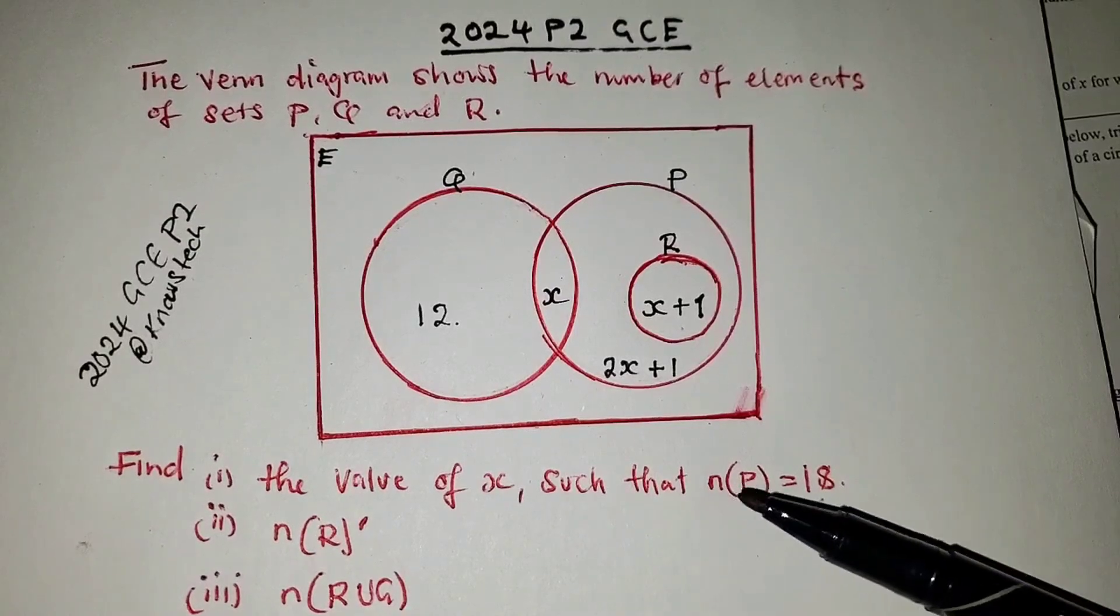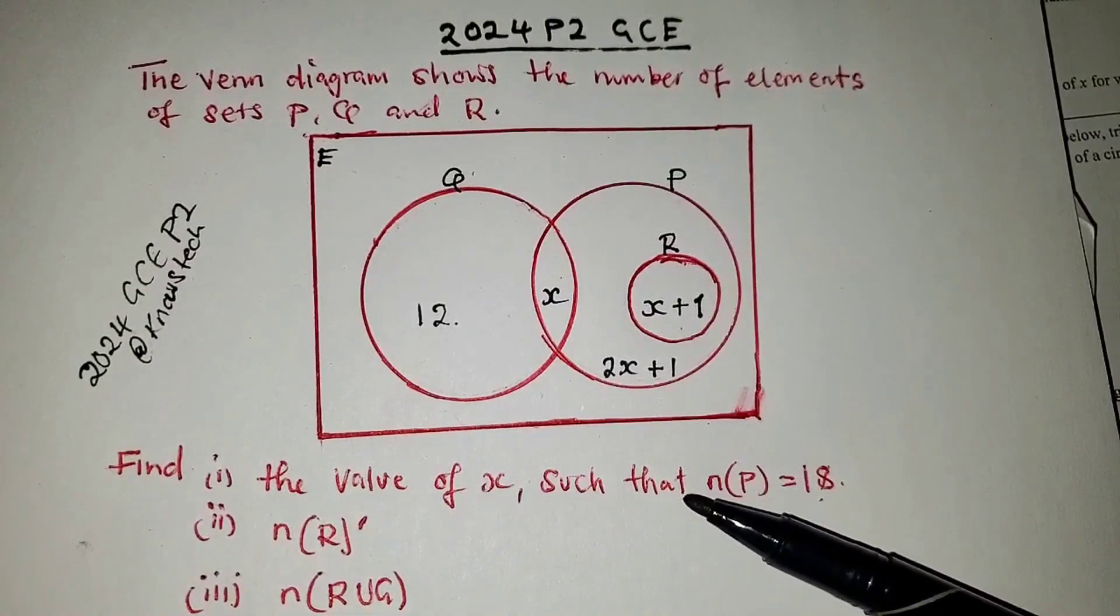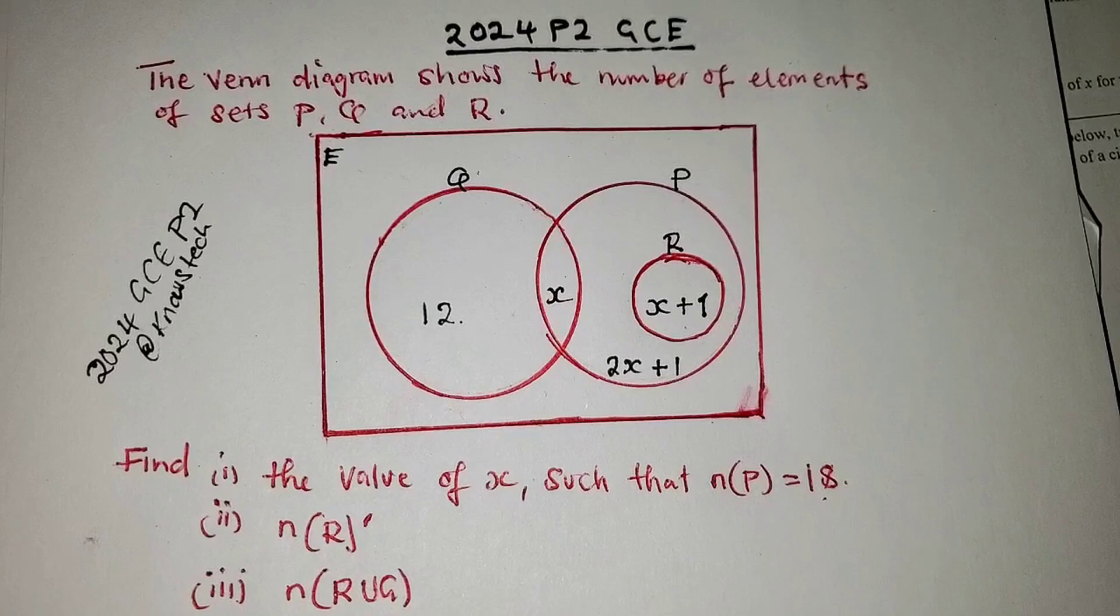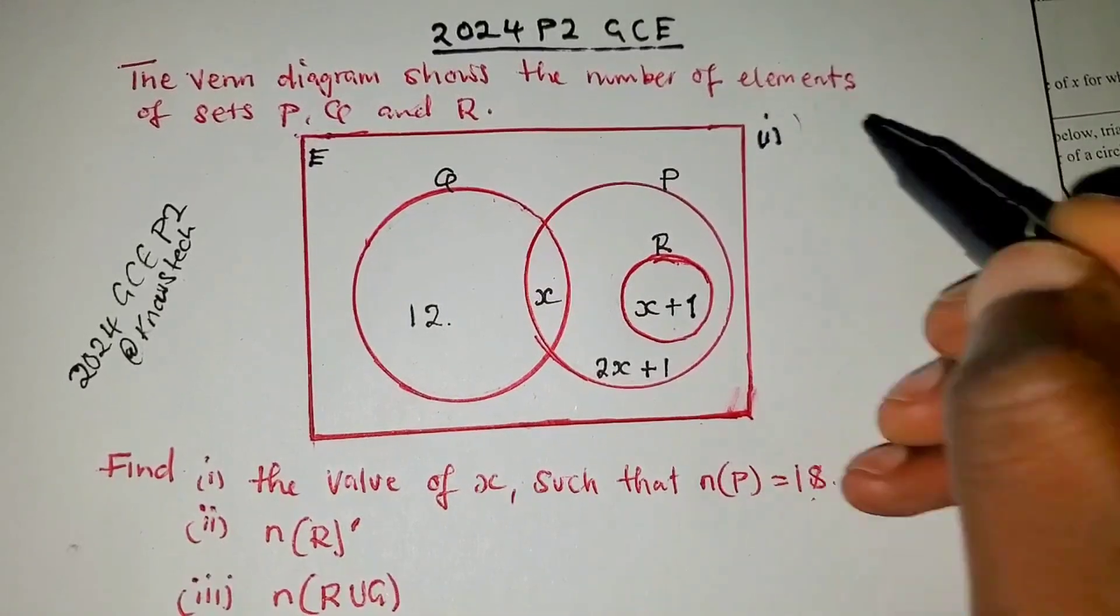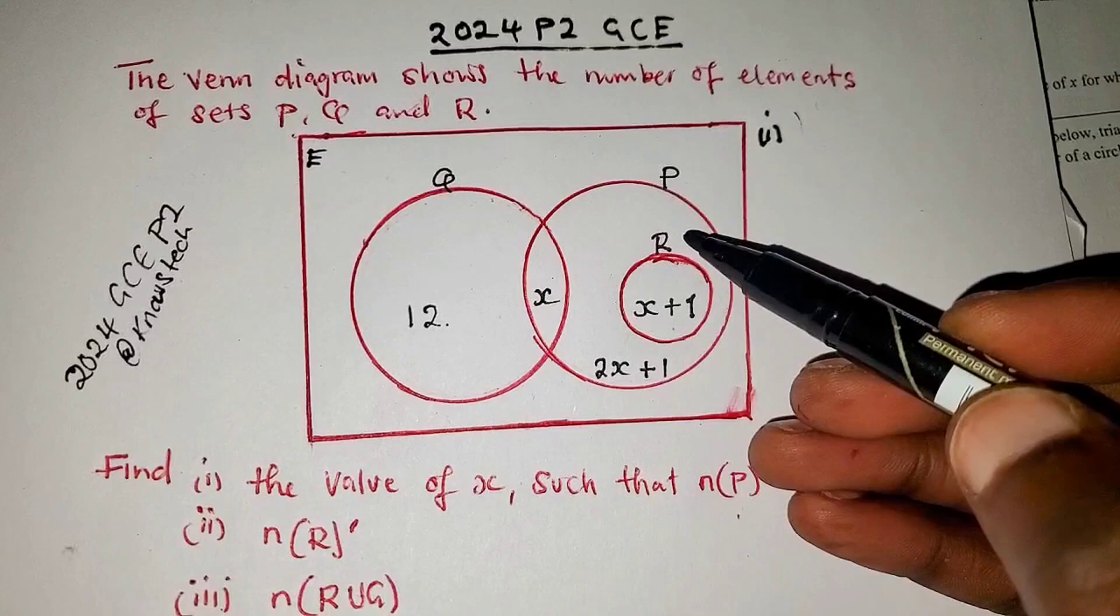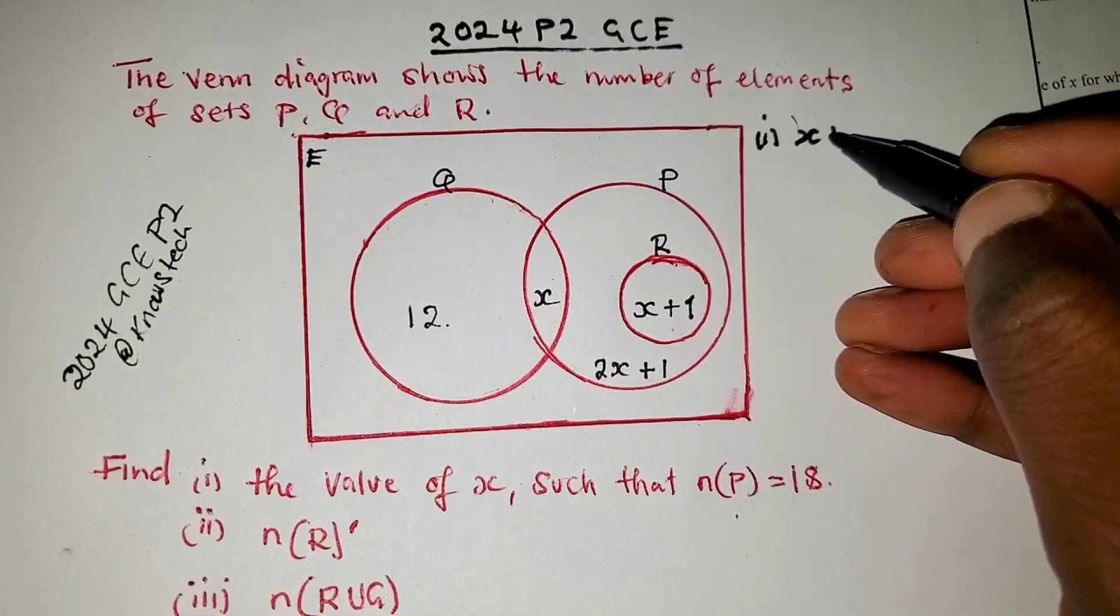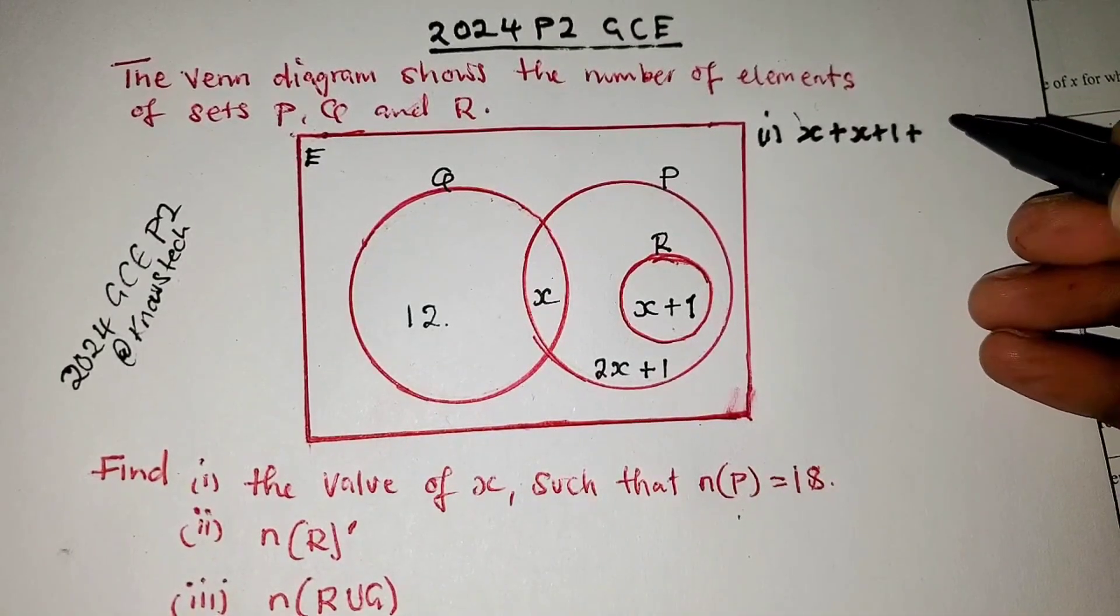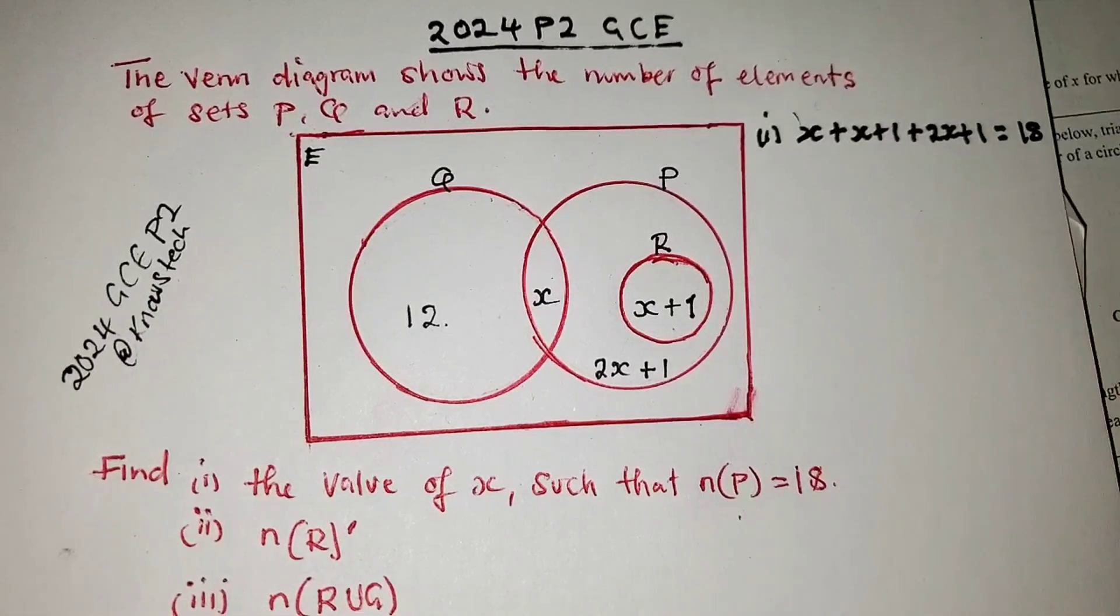Let's first read the question. Find the value of x such that the number of elements in set P is equals to 18. This n here means the number of elements in set P is equals to 18. So what we can do here, in set P we are going to add everything that is in this set, including set R since it is in set P. We are going to add x plus x plus 1 plus 2x plus 1, and this is equals to 18.